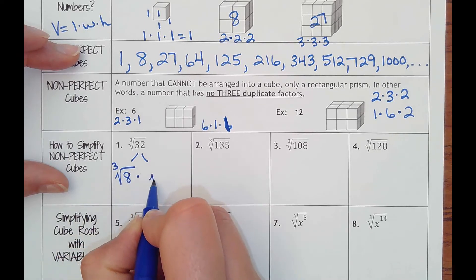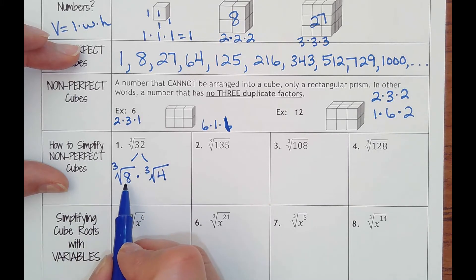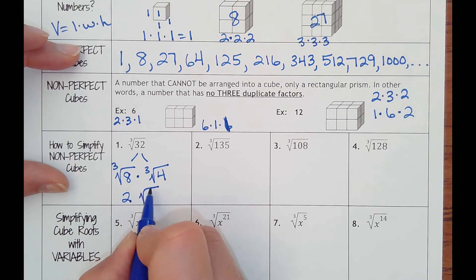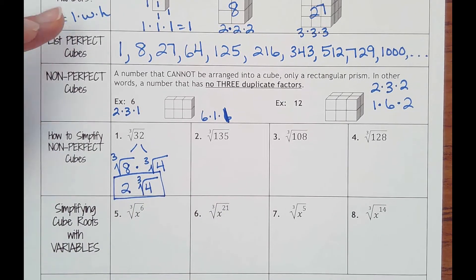So I'm going to break this down into the cube root of eight times the cube root of four. Eight times what makes 32? Four. Cube root of eight is two, so this would be two with a cube root of four left over. Make sure you're writing the correct index.